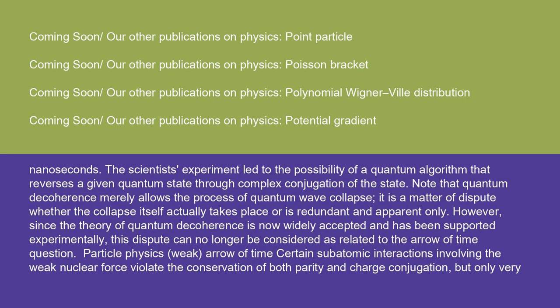The scientists' experiment led to the possibility of a quantum algorithm that reverses a given quantum state through complex conjugation of the state. Note that quantum decoherence merely allows the process of quantum wave collapse; it is a matter of dispute whether the collapse itself actually takes place or is redundant and apparent only. However, since the theory of quantum decoherence is now widely accepted and has been supported experimentally, this dispute can no longer be considered as related to the arrow of time question.